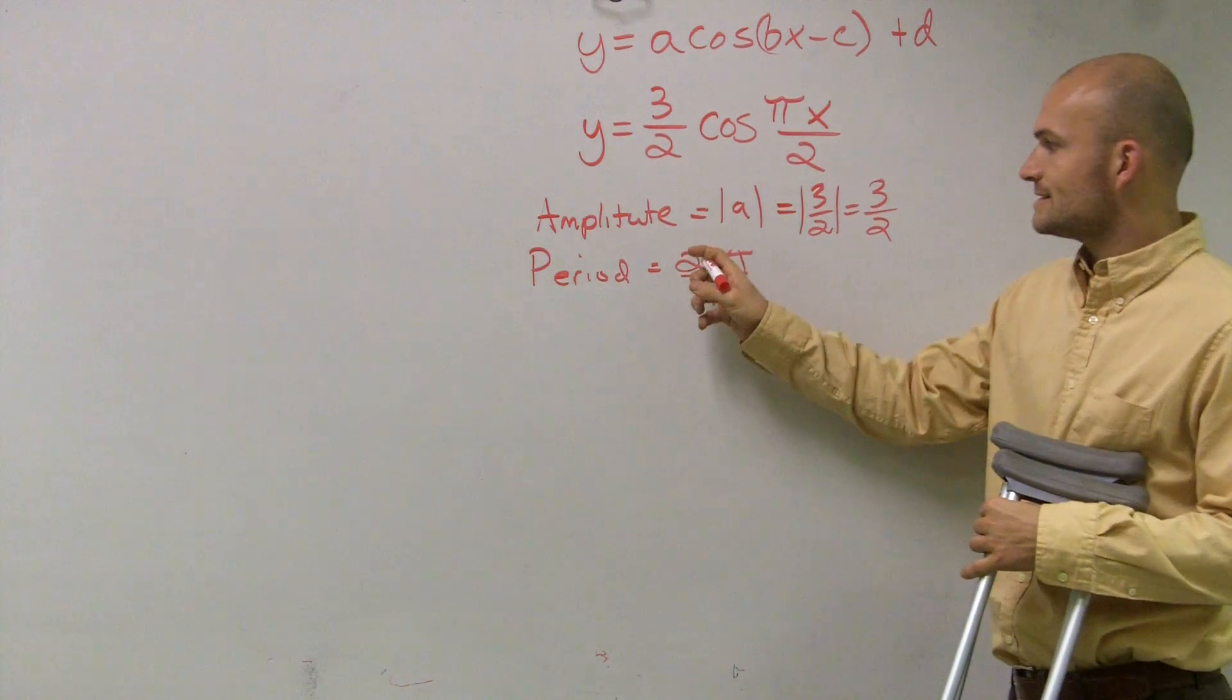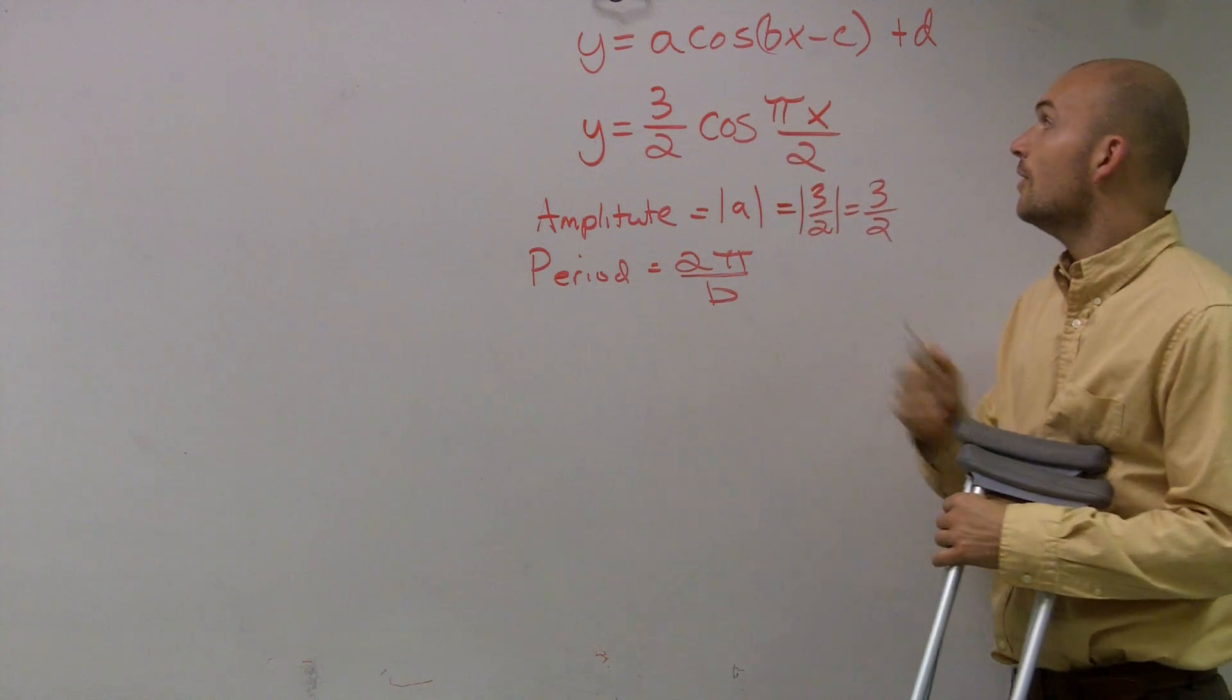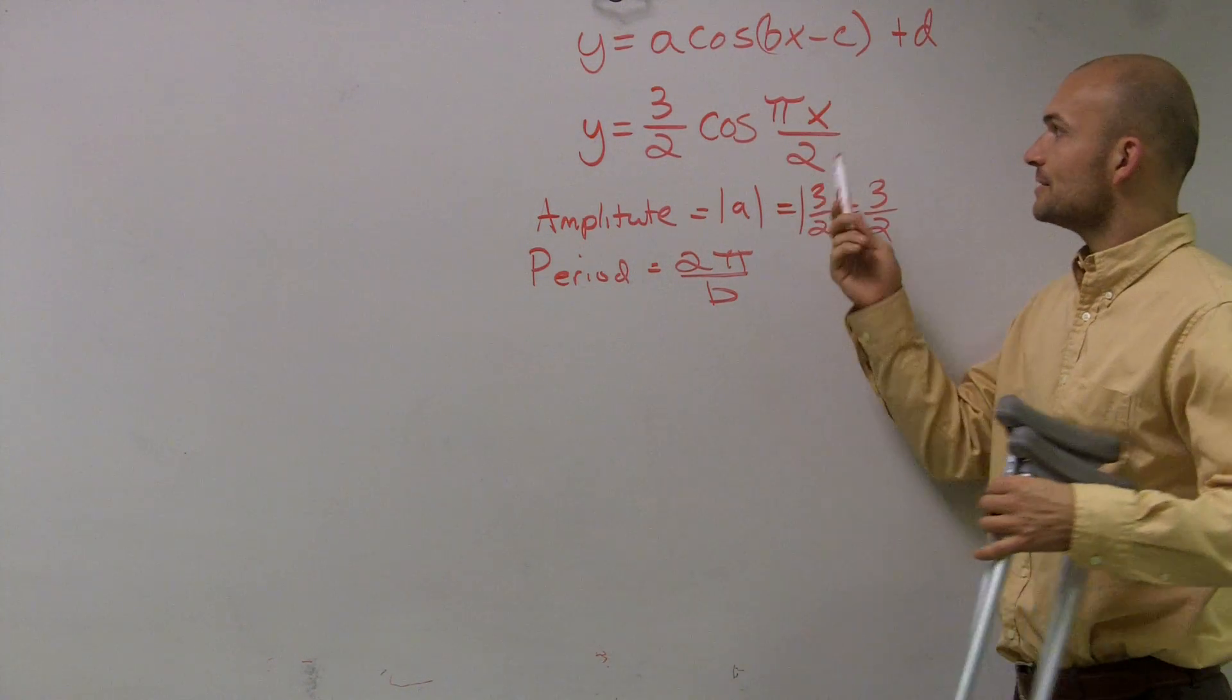Then, if I look at here, I say 2 times π divided by B. So what is my number that's in front of B? Well, a lot of students will say it's going to be π. But remember,